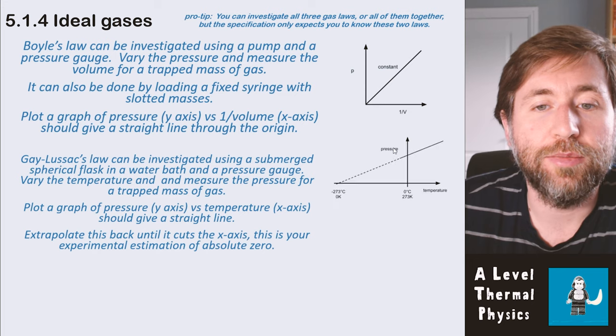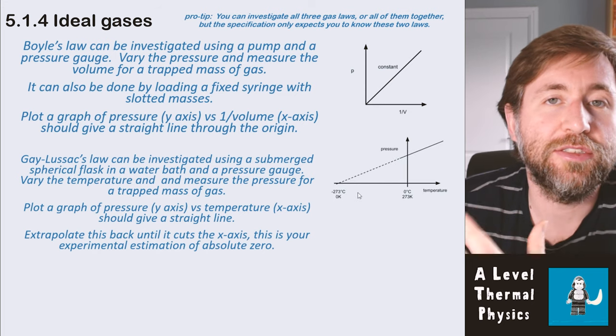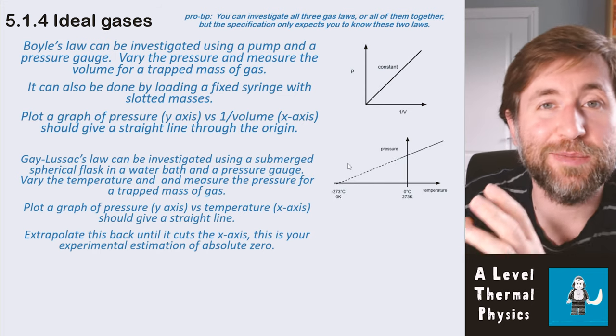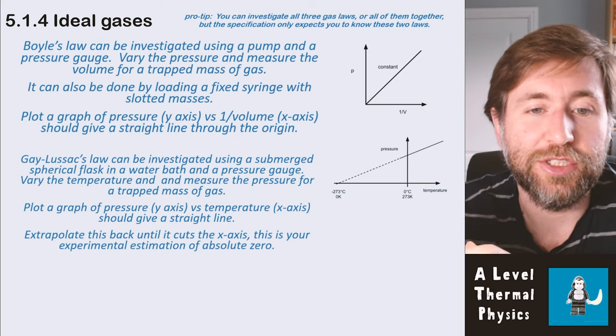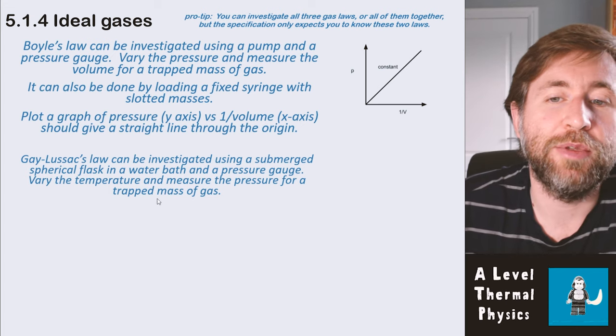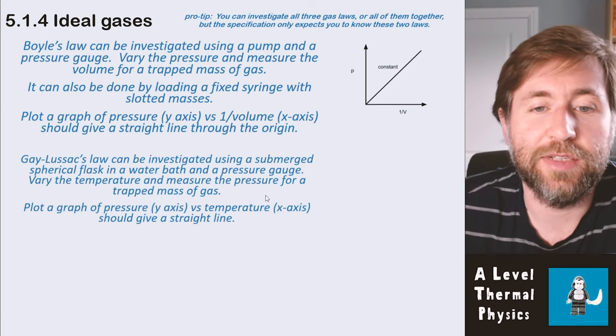So that's the same graph as we had with the inverse proportional on the previous slide, but we've actually manipulated the algebra to give us a straight line through the origin. That shows that pressure is inversely proportional to volume. The Gay-Lussac law can be investigated using a submerged spherical flask. So we have a fixed mass of gas in a flask, and that is submerged in a water bath, and that's linked up to a pressure gauge. We vary the temperature.